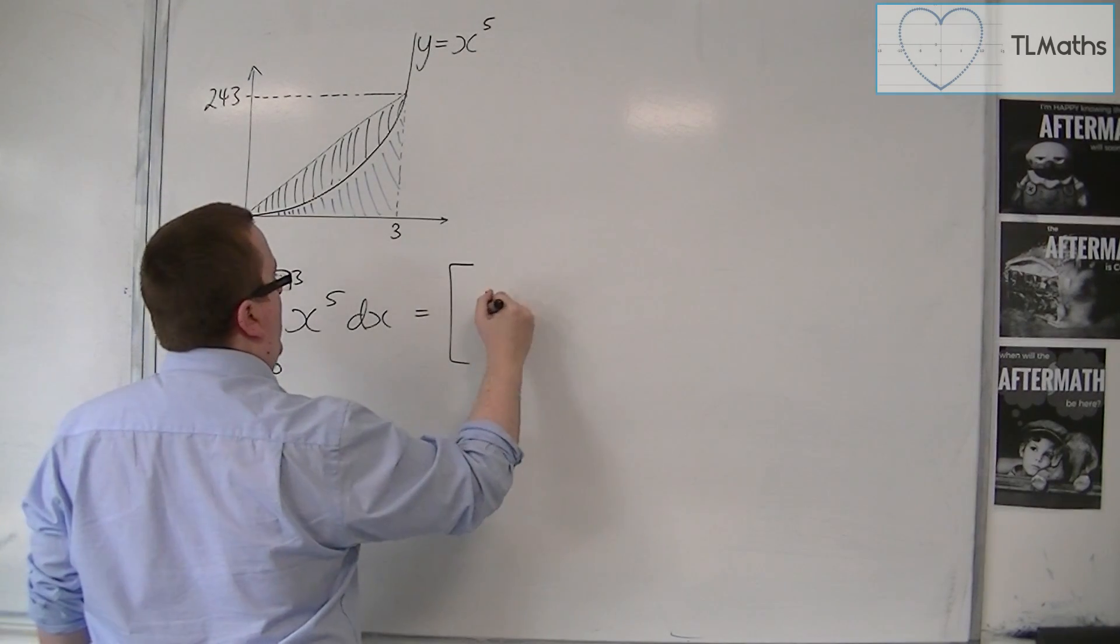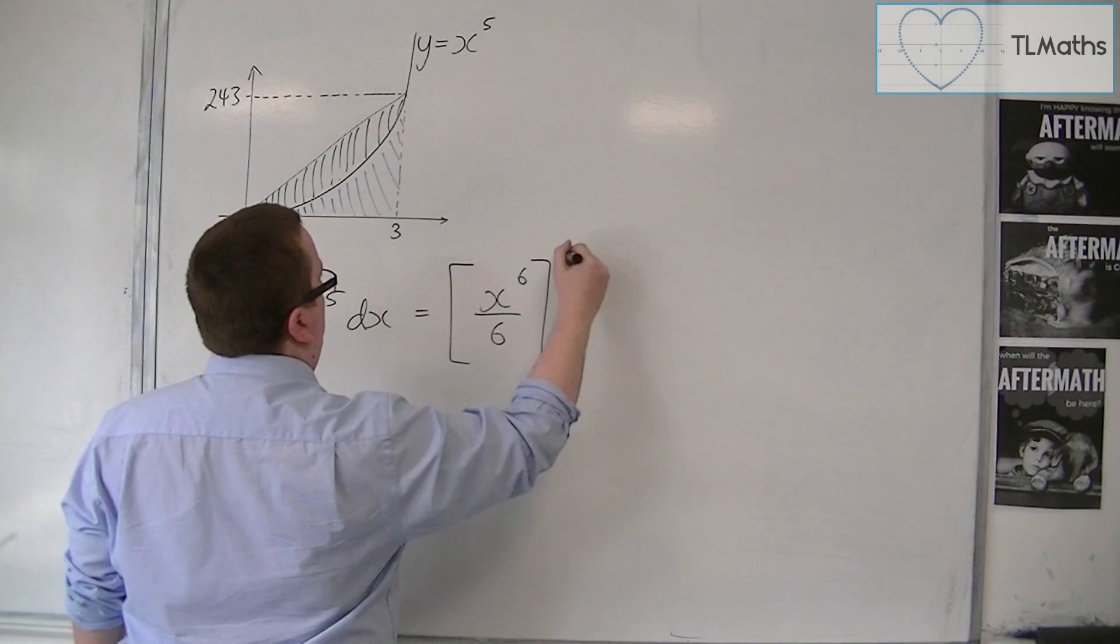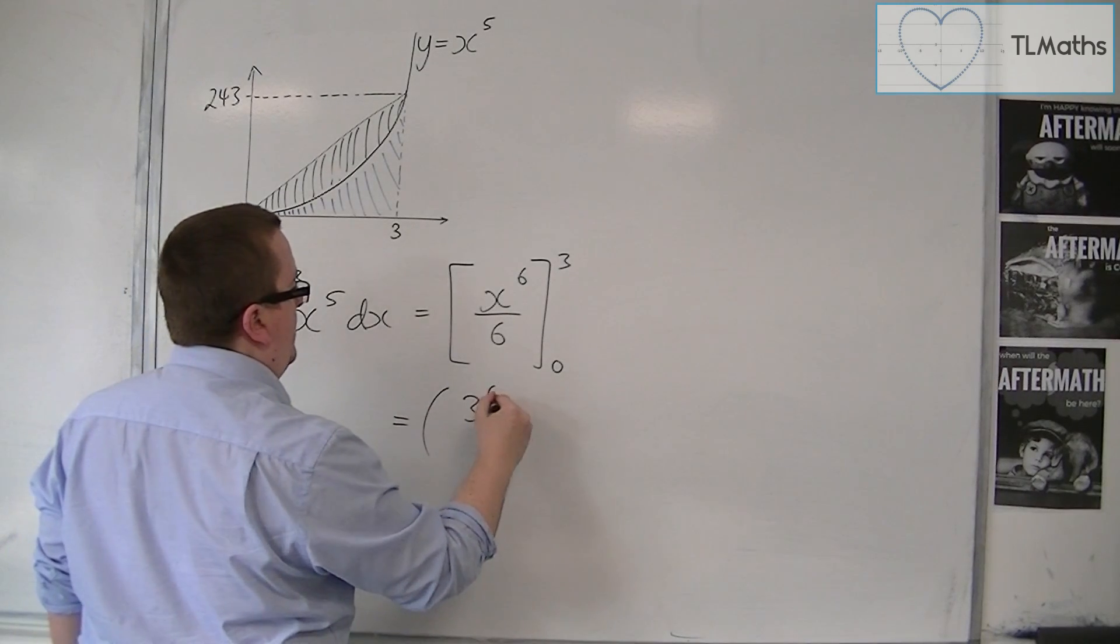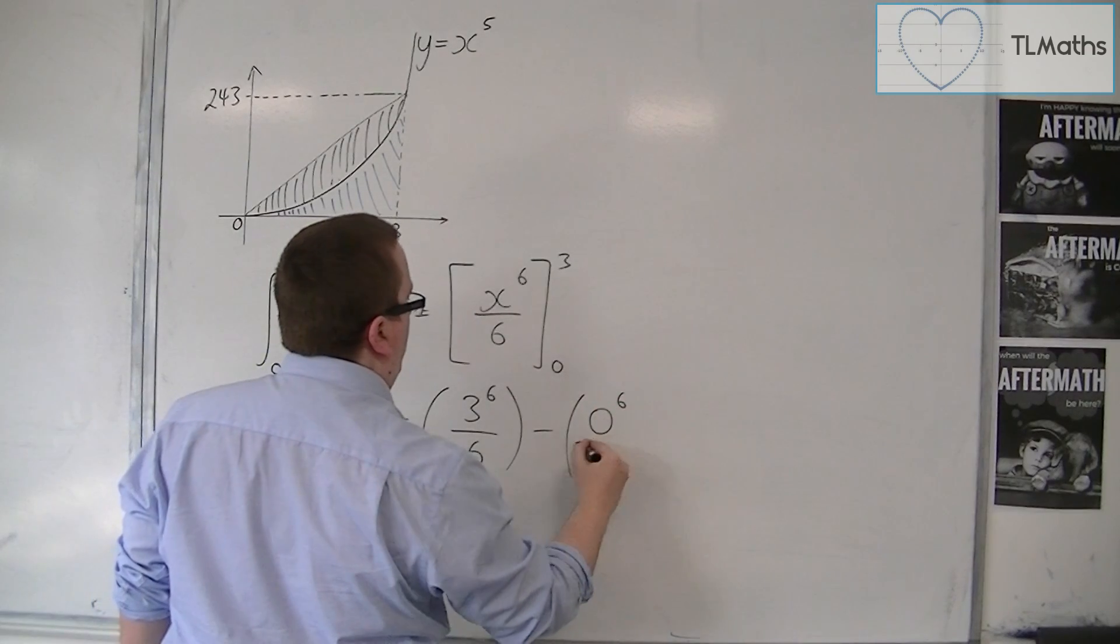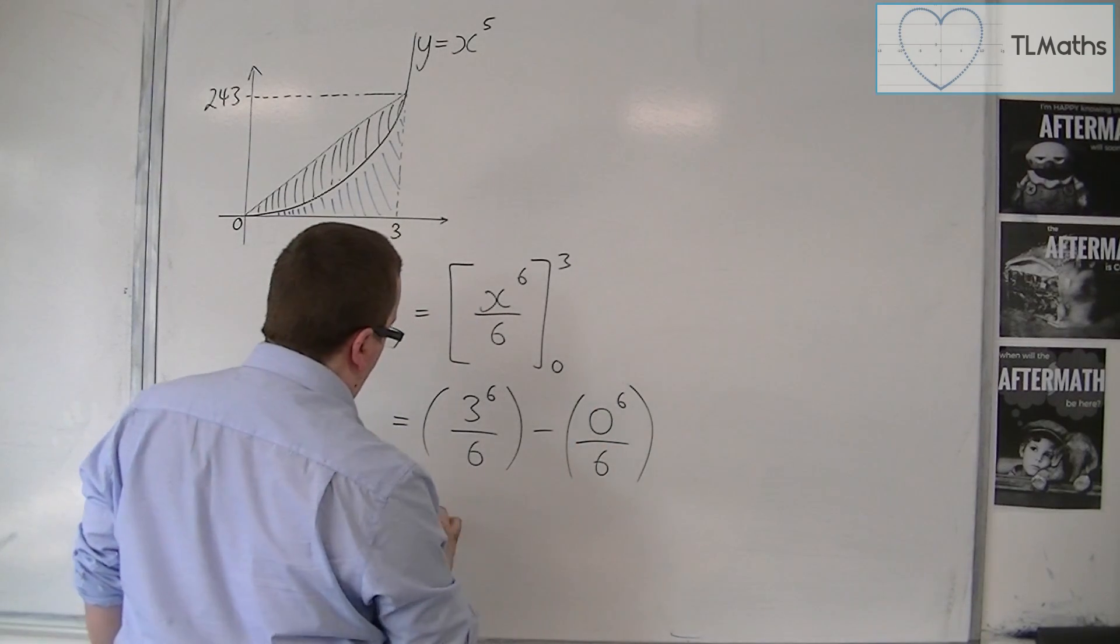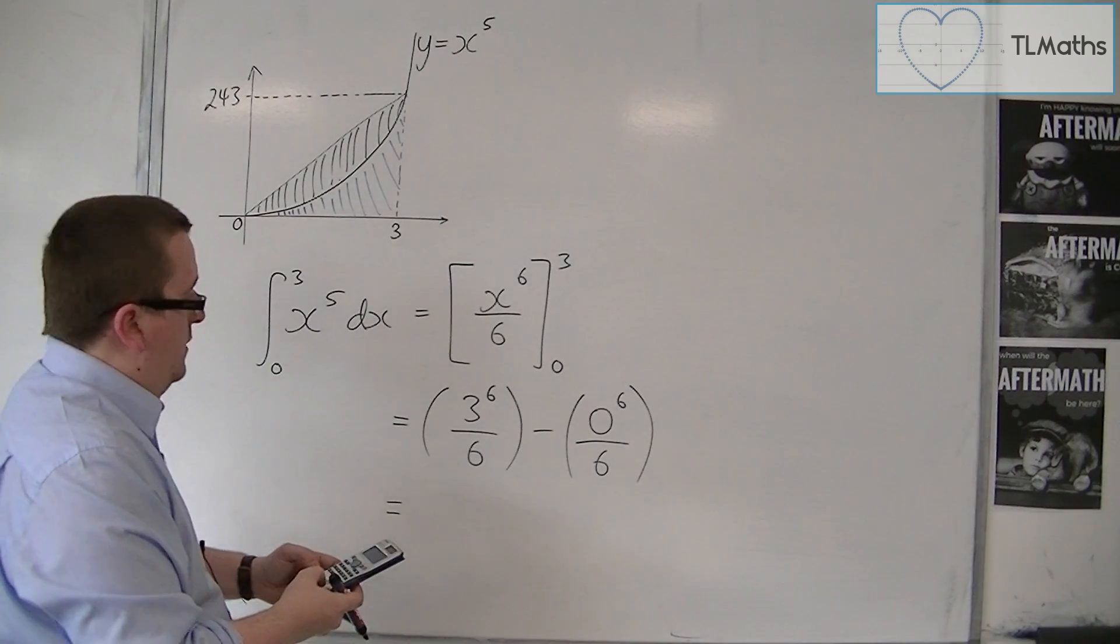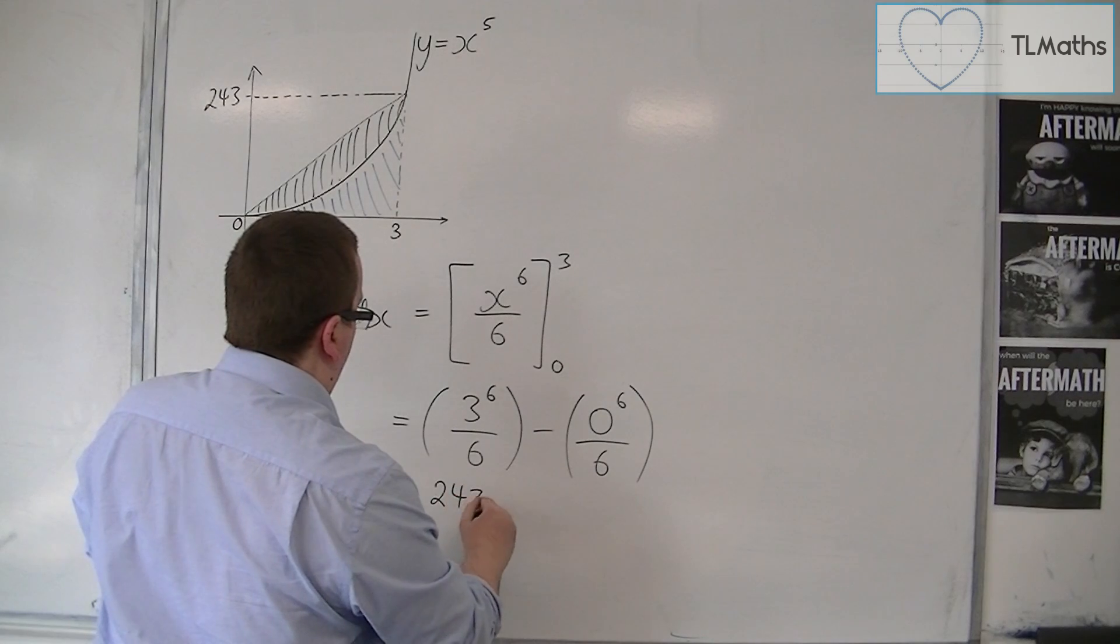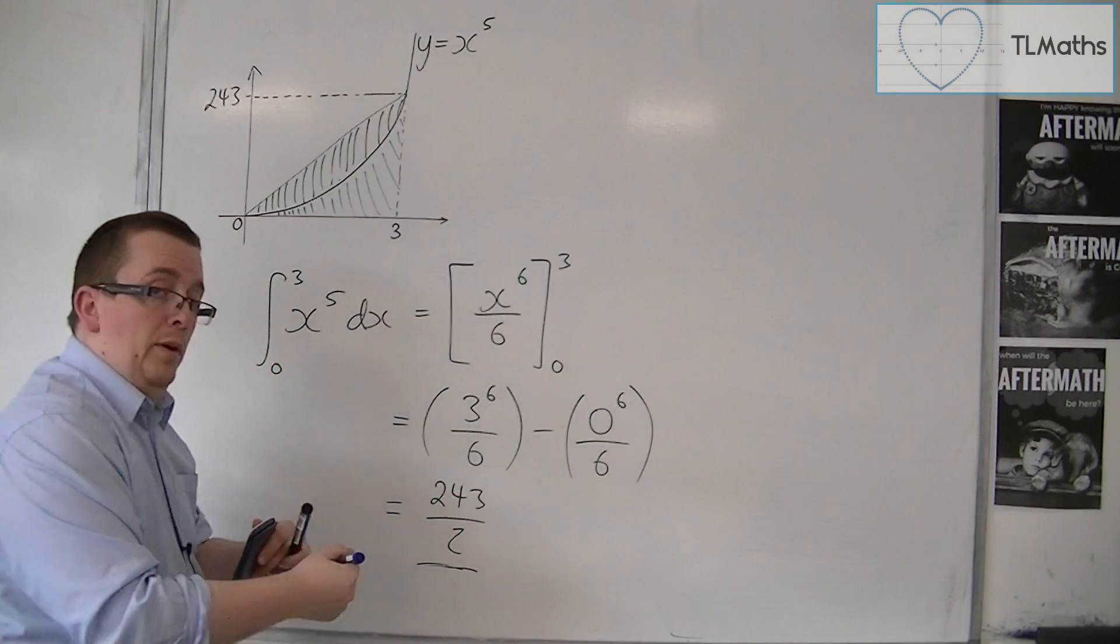So add 1 to the power, divide by the new power, and I'm going to evaluate that between 0 and 3. So I'm going to have 3 to the power of 6 over 6, take away 0 to the 6 over 6, which is just 0. So 3 to the power of 6 divided by 6 is 243 over 2. So that is the area of the blue region.